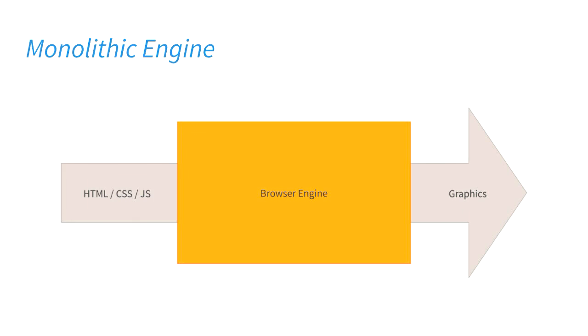Let's start with the constellation. To understand what we're doing with the organization of processes and threads inside Servo, it's helpful to go back and see how people did this before. We'll start with single-process monolithic engines, which is what that original Netscape probably was. Basically the browser engine sits in the middle — you stick HTML, CSS, and JavaScript in one end and you get graphics out the other. Everyone can write one of these; it's pretty easy.